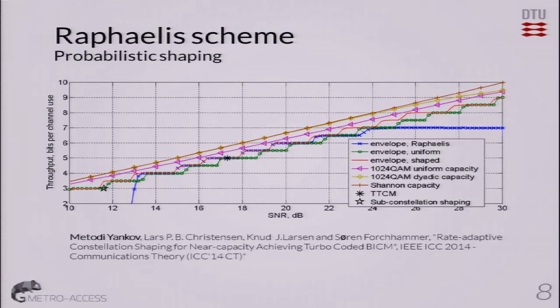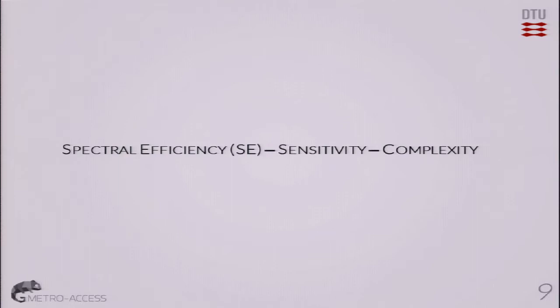Recapping so far: we have seen one problem, one proposed solution, and two possible methods to realize this. But now we close this section and move on to the other problem we consider: the tradeoff between spectral efficiency, sensitivity, and complexity.